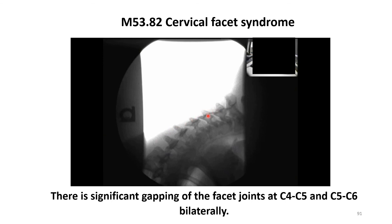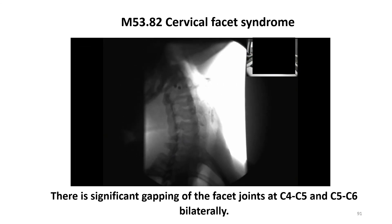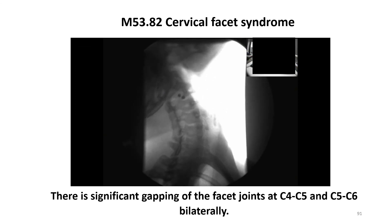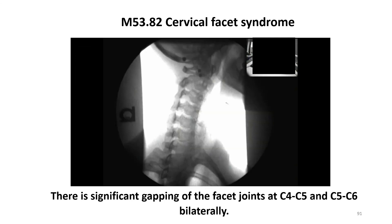The next diagnosis is M53.82, cervical facet syndrome. This patient has an ample supply of facet capsule injuries in three places on the study: the flexion and extension obliques, and the AP lower cervical with lateral flexions. The right posterior oblique shows significant gapping of the facet joints on the left at C4-C5 and C5-C6. Watching the mid-cervical spine facet joints at full flexion, you'll see significant gapping by the third rep — at C4-C5 and C5-C6, both are distracted and spread wide.